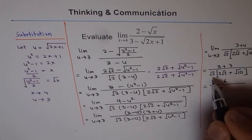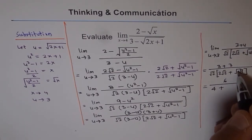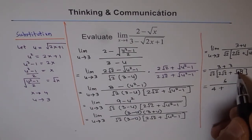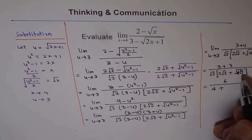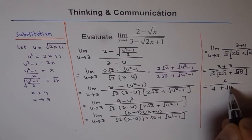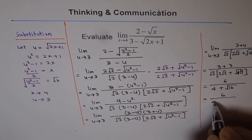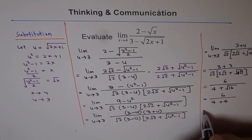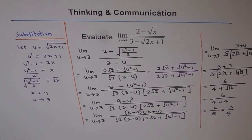Correction: u is 3, so u squared is 9, and 9 minus 1 is 8 — not 10 as written before. So we have square root of 8. Multiplying square root 2 by square root 8 gives square root 16 which is 4. The expression becomes 6 over (4 plus 4), which is 6 over 8. Dividing by 2 gives 3 over 4. So the limit of this function is 3 over 4.